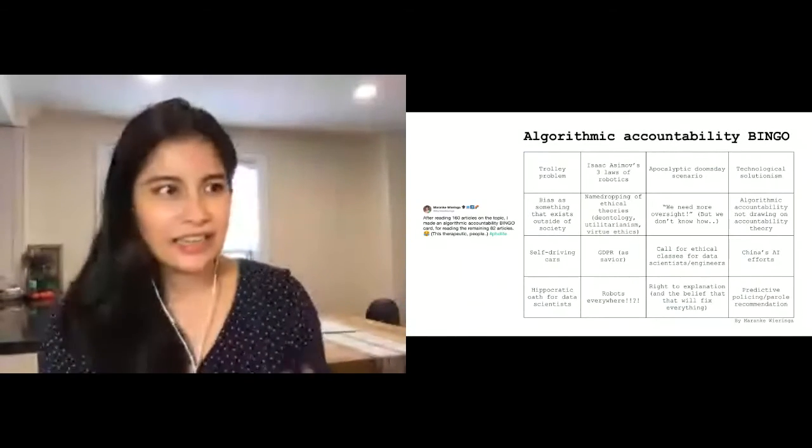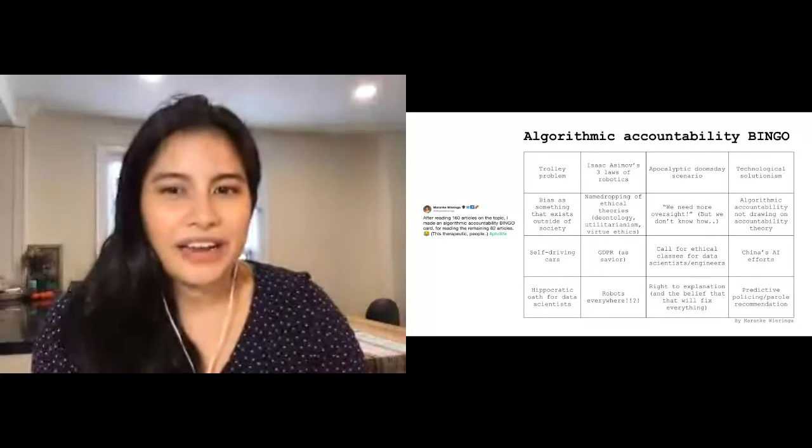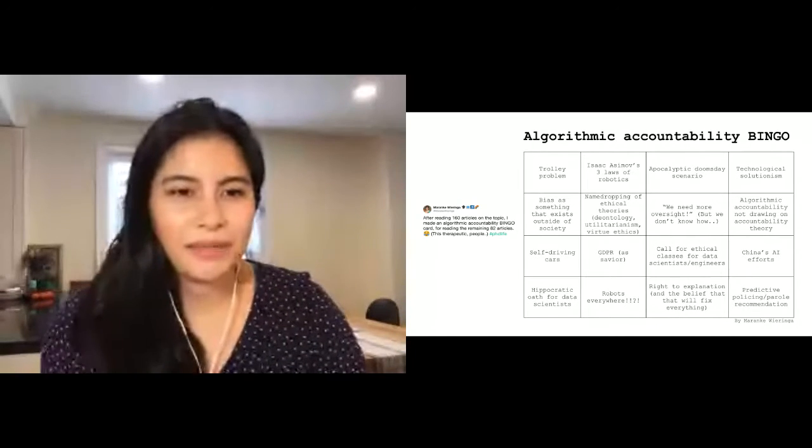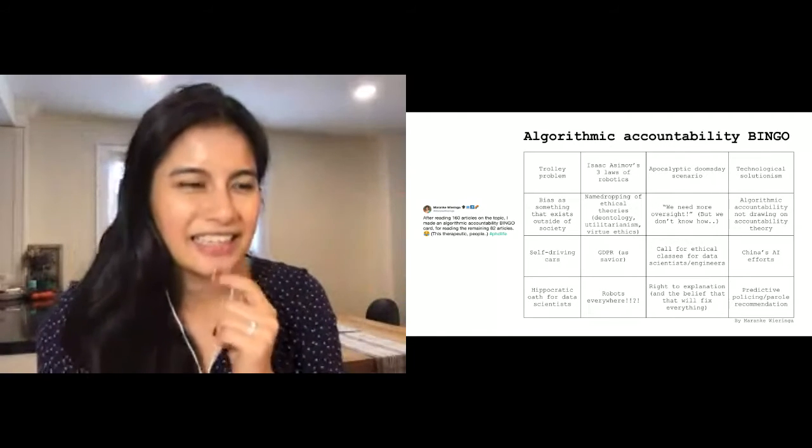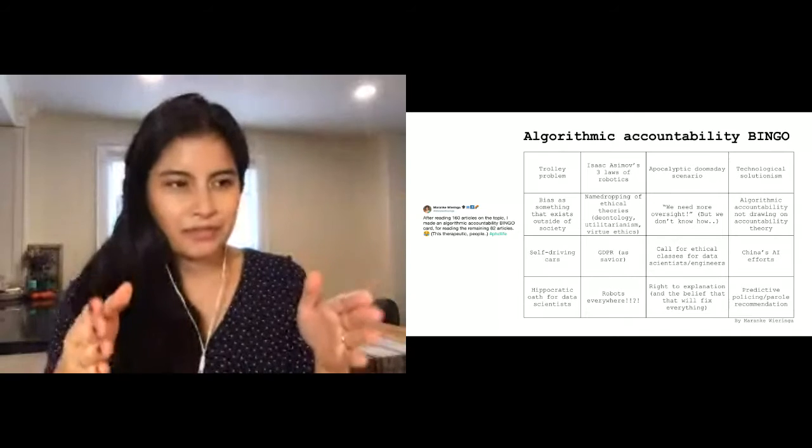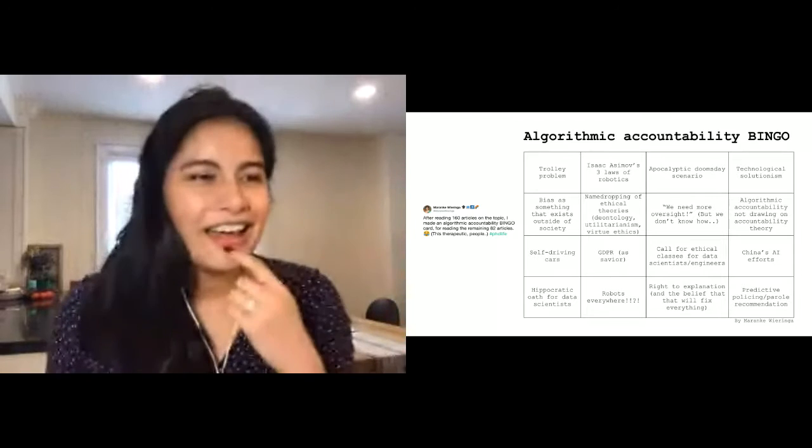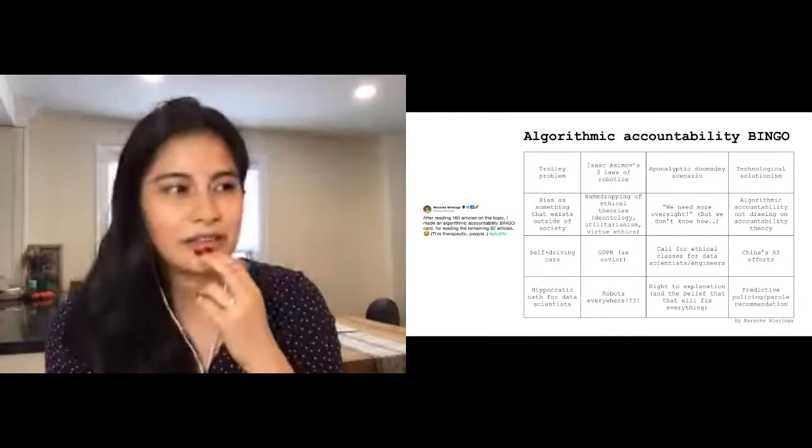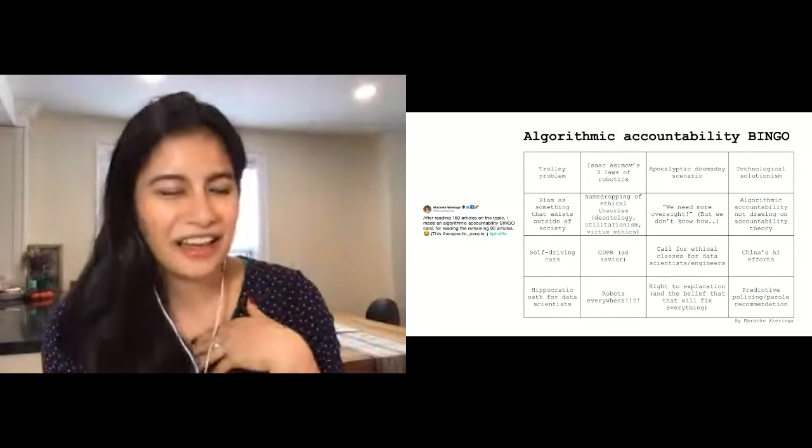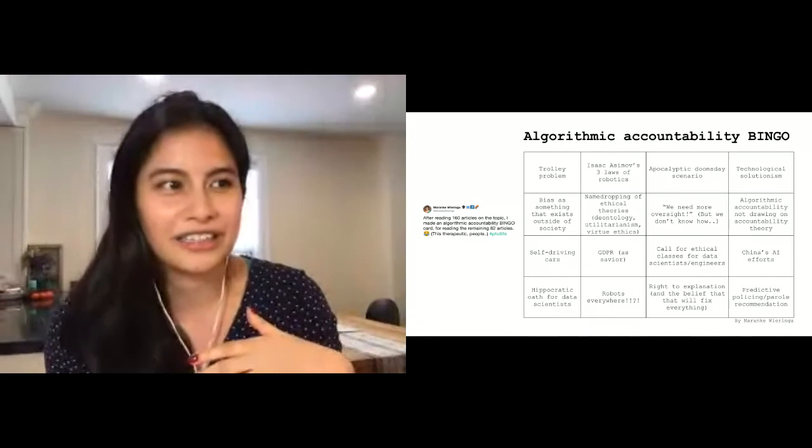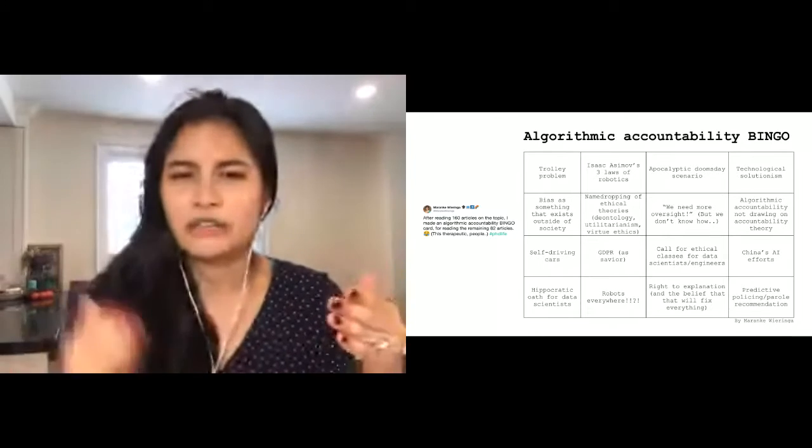I ran into this algorithmic accountability bingo sheet from Merengue Ringa. They read 160 articles on algorithmic accountability and FAT-ML, and then came up with this bingo card afterwards. In the middle-right bottom, there's a call for ethical classes for data scientists or engineers. A lot of people have been calling for that. Another one—not to throw Branch under the bus—there's a Hippocratic Oath for data science being called for there. I've given a talk that called for this too, also talked about self-driving cars. And then in the top right is that technological solutionism, which is that first wave of algorithmic accountability. I just thought this is a fun bingo card to include.